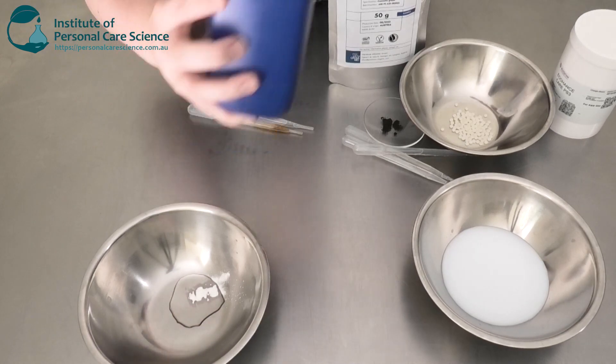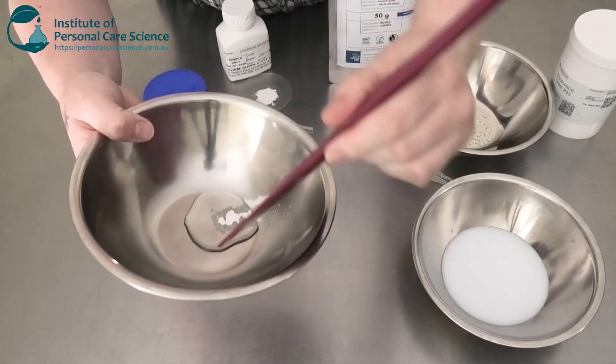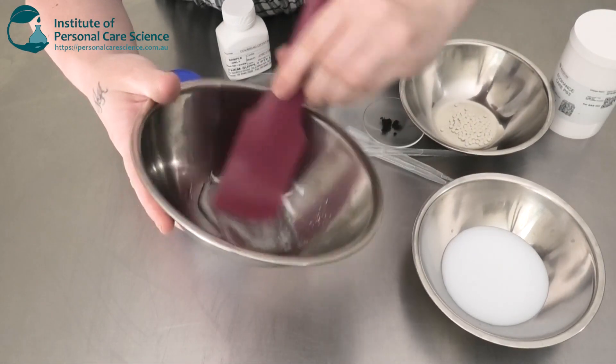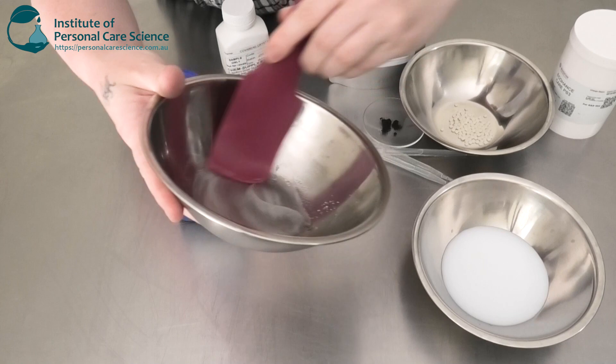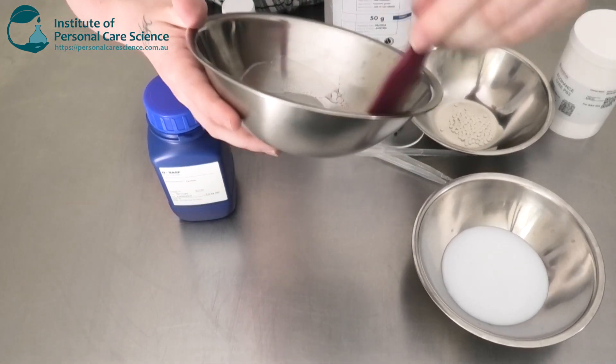BASF has brought out a whole range of Verdescent materials. So this is a nice clear grade of xanthan gum. It's really easy to slurry and it's not as stringy or sticky as a lot of other grades of xanthan gum.